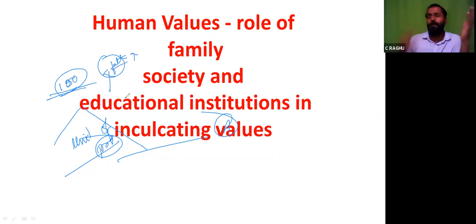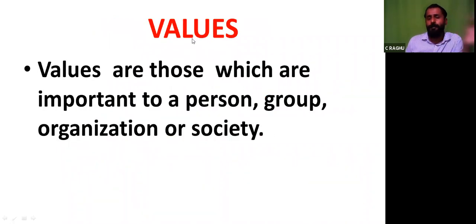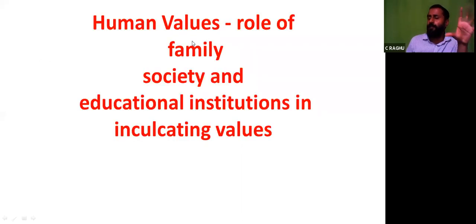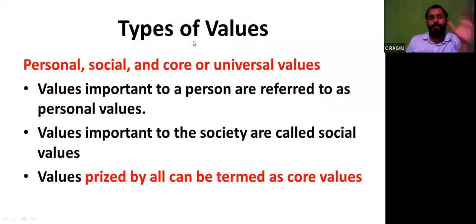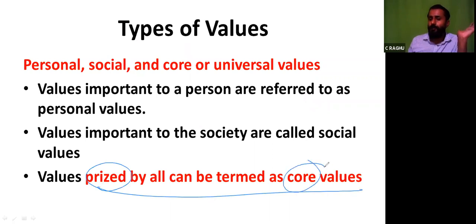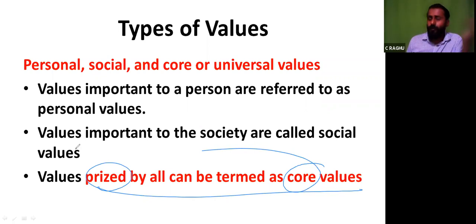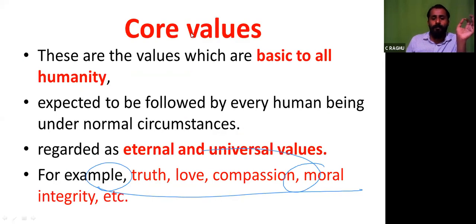Values are those things which are important. If it is important for a person, it becomes a personal value. If it is important for society, it becomes a societal value. Values which are prized by all are called core values or universal values — for example, truth, honesty, compassion, integrity. These are universal or eternal values present in most societies.